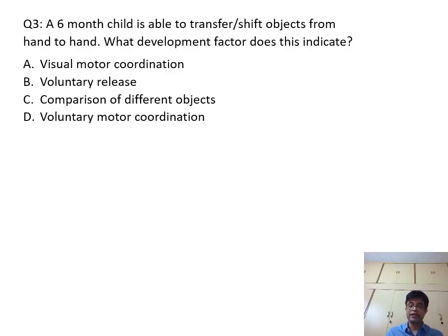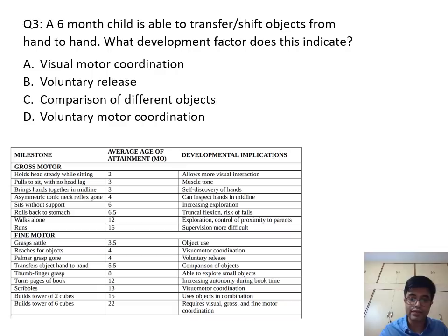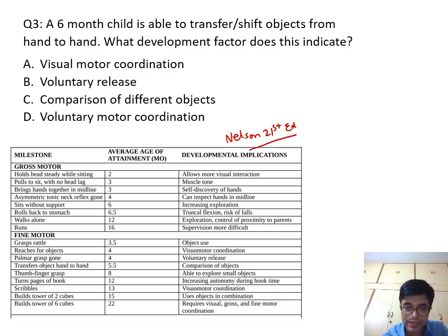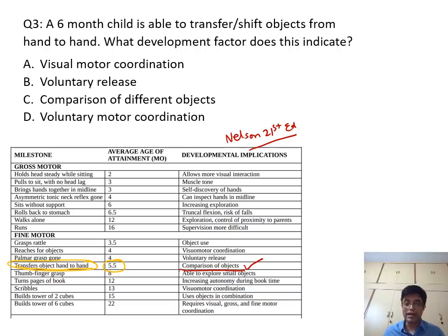Question 3 is very tricky. A six-month-old child is able to transfer or shift objects from hand to hand. What development factor does this indicate? This is taken from a table in Nelson 21st edition. The table shows that transfer of objects hand to hand has an average age of attainment of 5.5 to 6 months, and it implicates comparison of objects. It is not a feature suggesting development of visuomotor coordination.